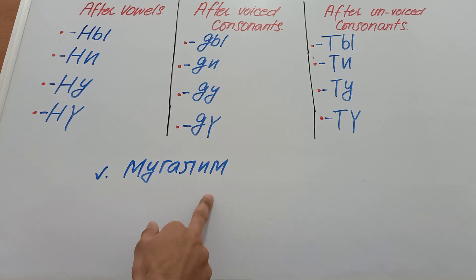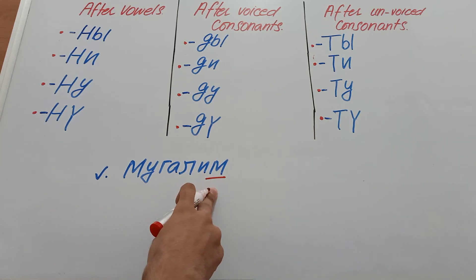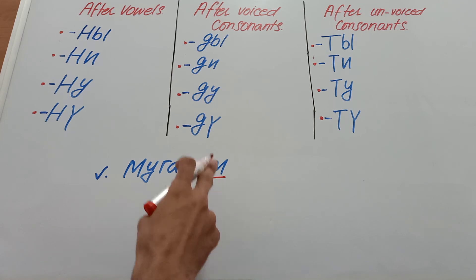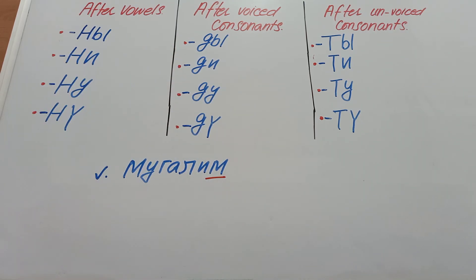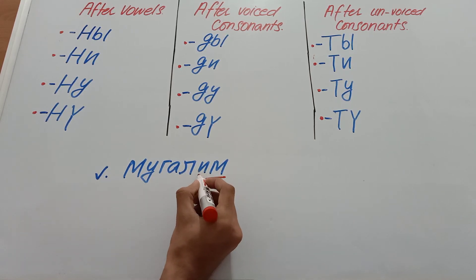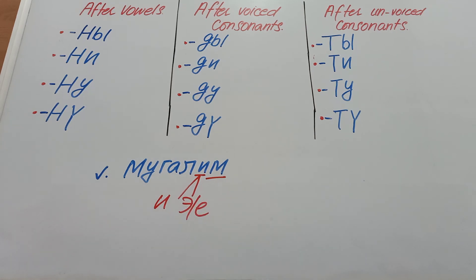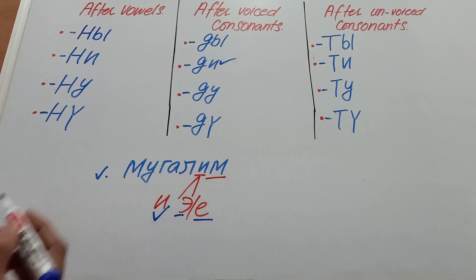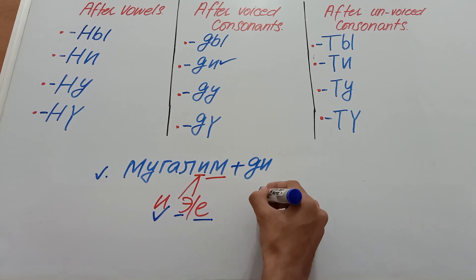Next we have the example 'moghalim' — moghalim means teacher. We want to make it 'the teacher.' We locate the extreme right alphabet, which is 'm'. Since 'm' is a voiced consonant, according to our table after voiced consonants we can add any one of these endings according to vowel harmony. The extreme rightmost first vowel is 'e'. The vowel harmony of 'e' gives 'e' and 'a'. We don't have 'a' in the relevant endings, but we have 'e' in one ending, so we choose that. It becomes 'moghalim the' — moghalim the means 'the teacher.'